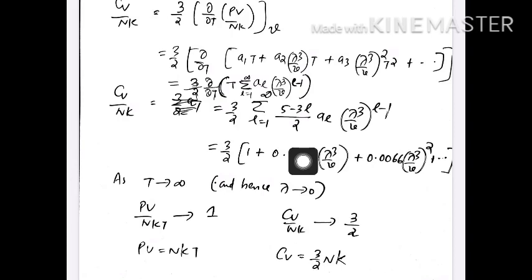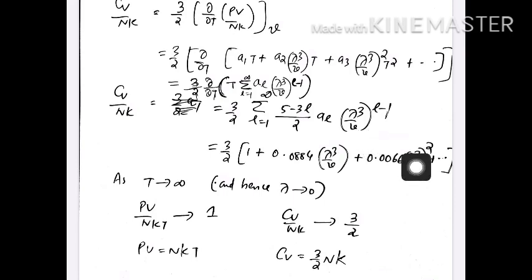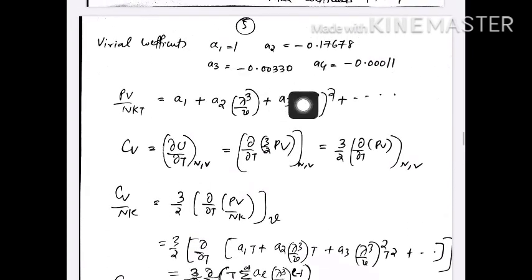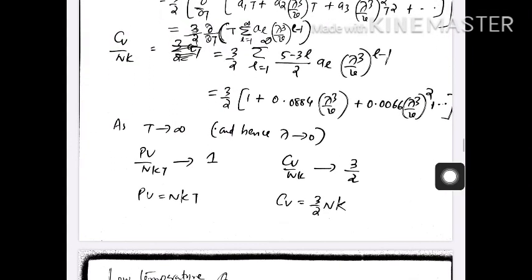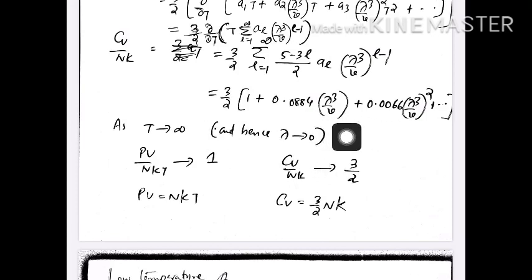Remember, λ = h/√(2πmkT) is the thermal wavelength, so temperature is present in λ. Applying the product rule as we differentiate, we get the expression (3/2) sigma (1 − 3l/2) a_l λ³/V^(l−1). We know the values a₁, a₂, a₃, a₄, a₅. Computing by putting l = 1, 2, 3 gives these terms, so C_V/Nk is (3/2) of this series in terms of λ³/V.